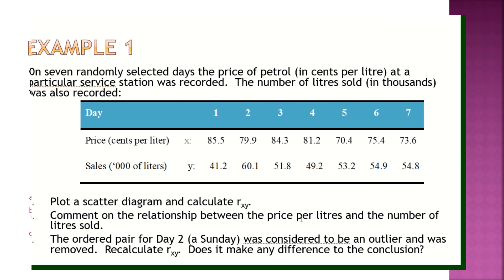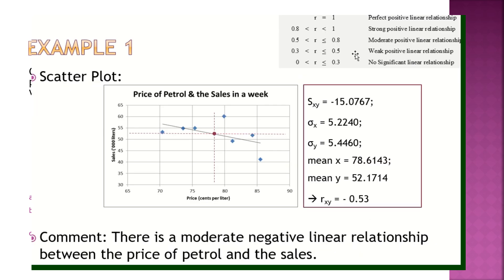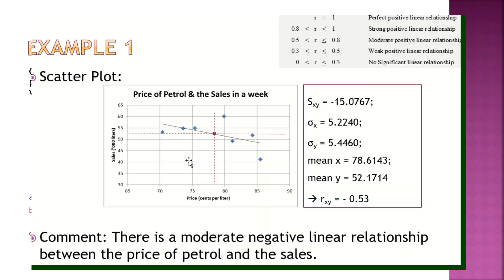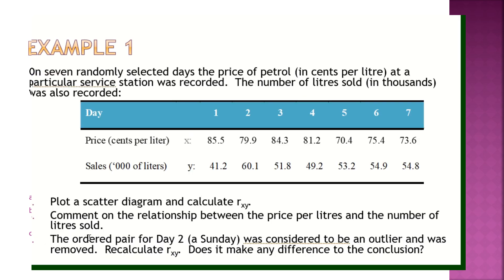Comment on the relationship between the price. So comment on the relationship. You're going to use this scale. The one that I just taught you in the last slides. This is negative 0.53. Where is 0.53? Inside where? Inside here, isn't it? So moderate negative linear relationship between - you want to write between X and Y, I got no issue because here they gave you X and Y. No problem. You can write between X and Y. Or between the price of petrol and the sales is up to you.